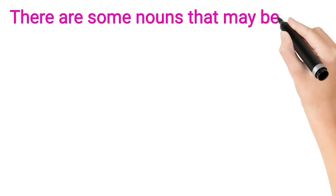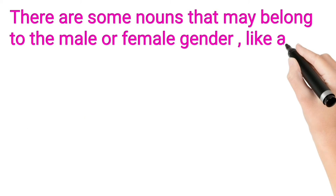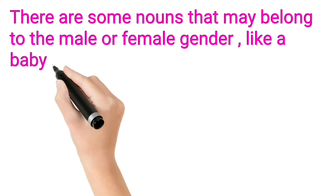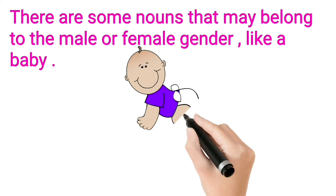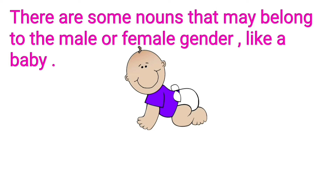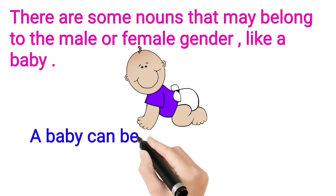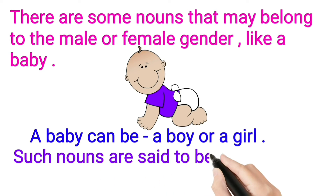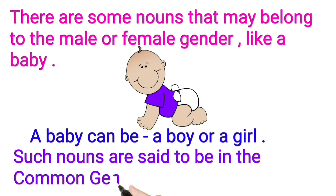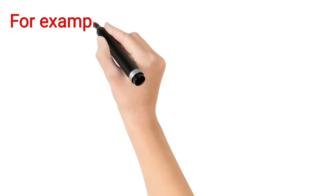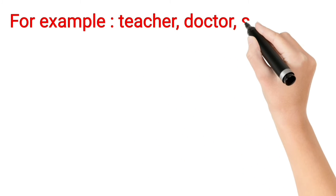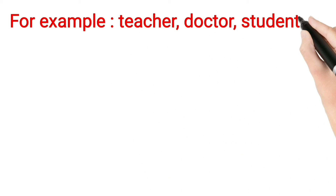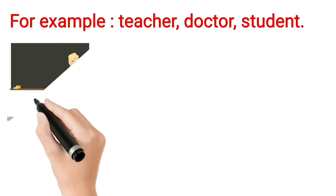There are some nouns that may belong to the male or female gender, like a baby. A baby can be a boy or a girl. Such nouns are said to be in the common gender. For example: Teacher, Doctor, Student.